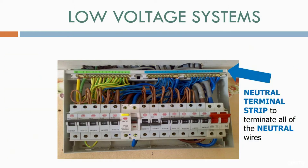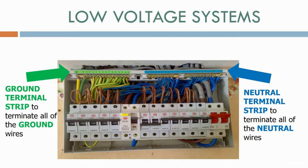We also have a neutral terminal strip to terminate all of the neutral wires, and finally a ground terminal strip to terminate all of the ground wires. You will find all of these basic elements in any house consumer unit.